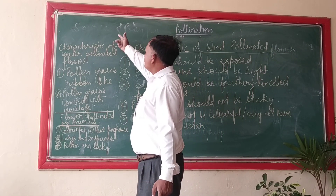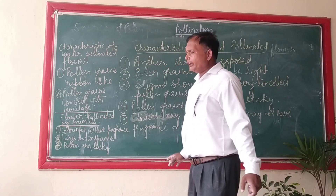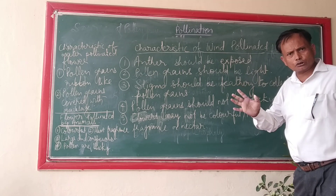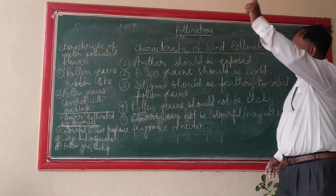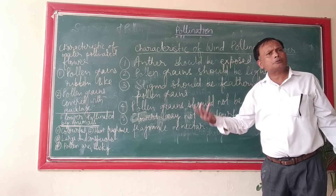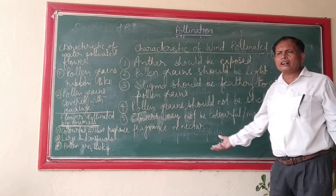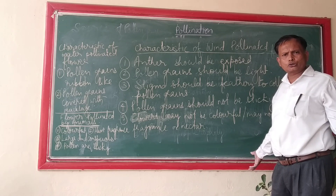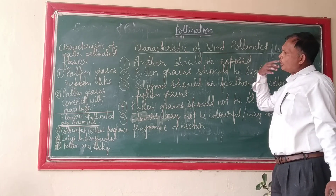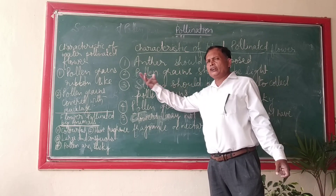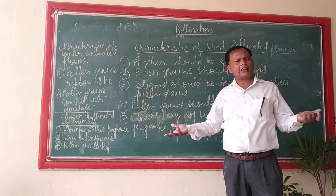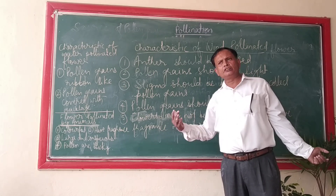Now we will study the characteristics of water-pollinated flowers. Along with two characteristics shared with wind-pollinated flowers — pollen grains should not be sticky, and flowers may or may not be colorful — water is also an abiotic agent, so it is not going to visualize the color of the flower. Water-pollinated flowers may or may not be colorful, and may or may not have fragrance, since fragrance has nothing to do when the pollinating agent is water.